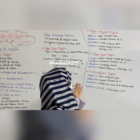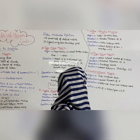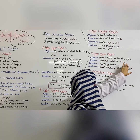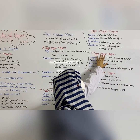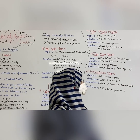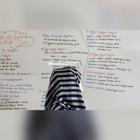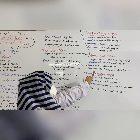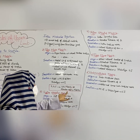The fifth muscle is teres minor. Its origin is the upper lateral border of the scapula, insertion is the greater tubercle of the humerus, and its innervation passes through the teres minor muscle. The function is lateral rotation and it also stabilizes the shoulder joint. The third, fourth, and fifth muscles together are known as the rotator cuff muscles.